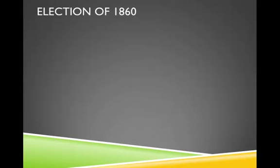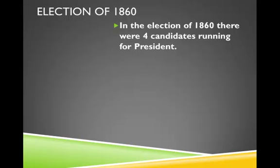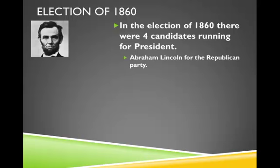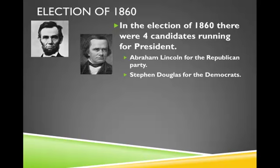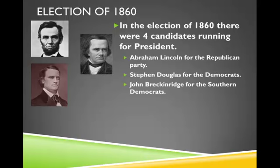In the election there were four candidates running for president. Abraham Lincoln was the Republican candidate, who had become a well-known name throughout America with the Lincoln-Douglas debates. It was a bit of a rematch as Stephen Douglas also ran for president, this time for the Democratic party. The Democratic party had split over the idea of compromise on the slavery issue — Stephen Douglas represented the existing Democratic party, and John Breckinridge represented the new southern Democratic party, primarily made up of states in the deep south. John Bell was the candidate for the Whig party.